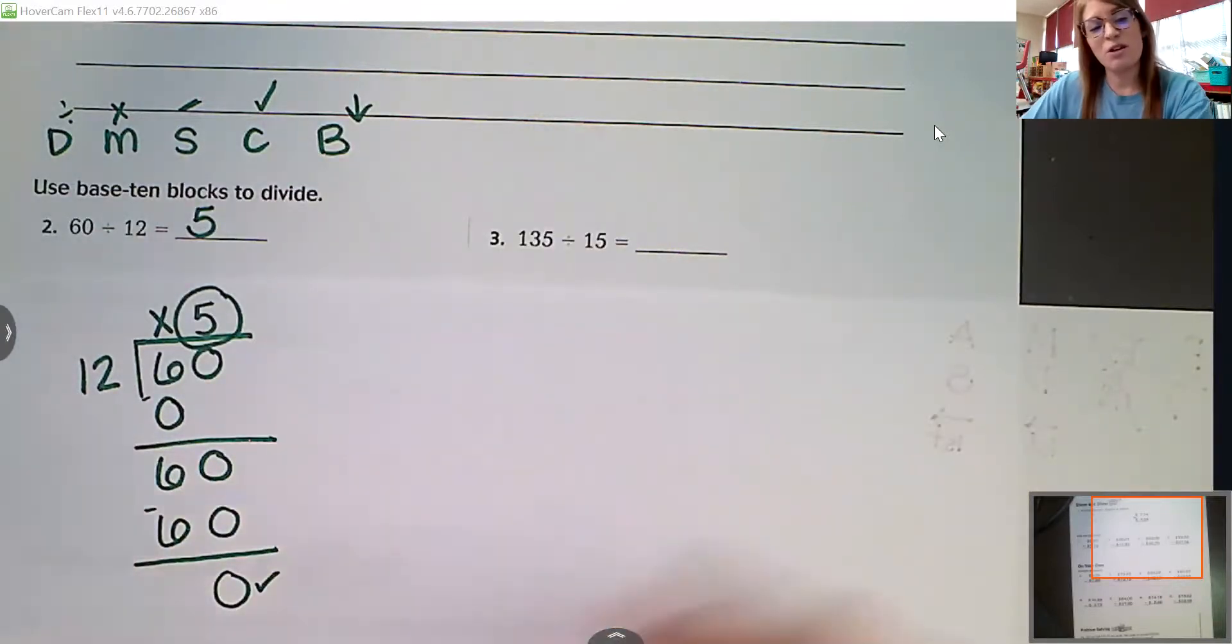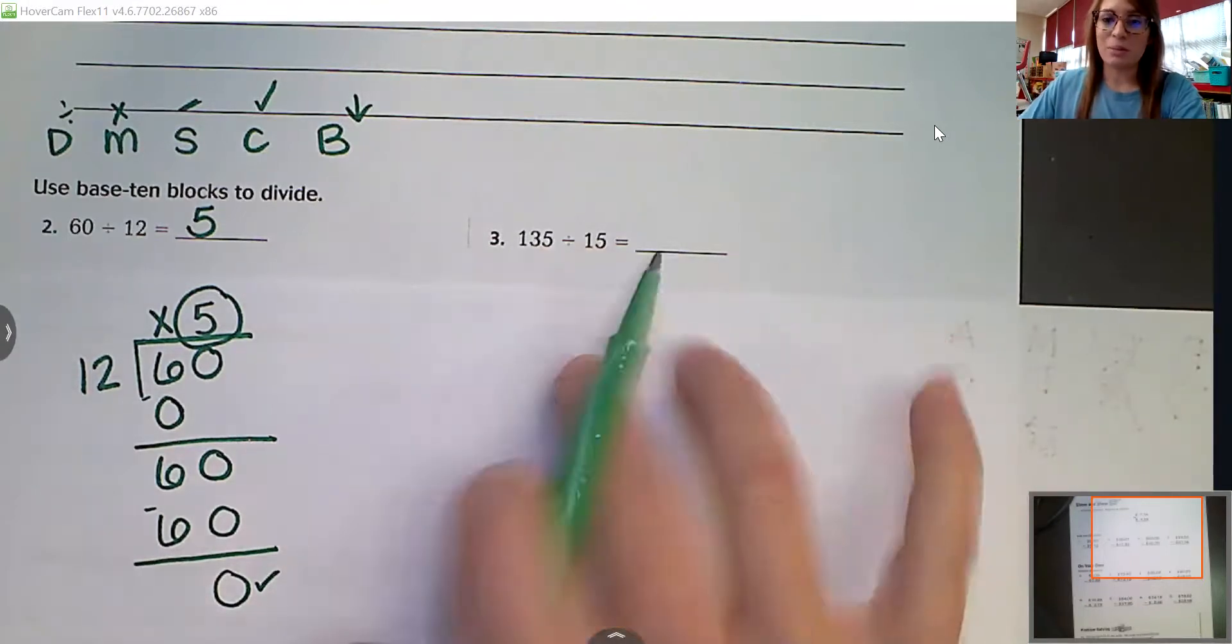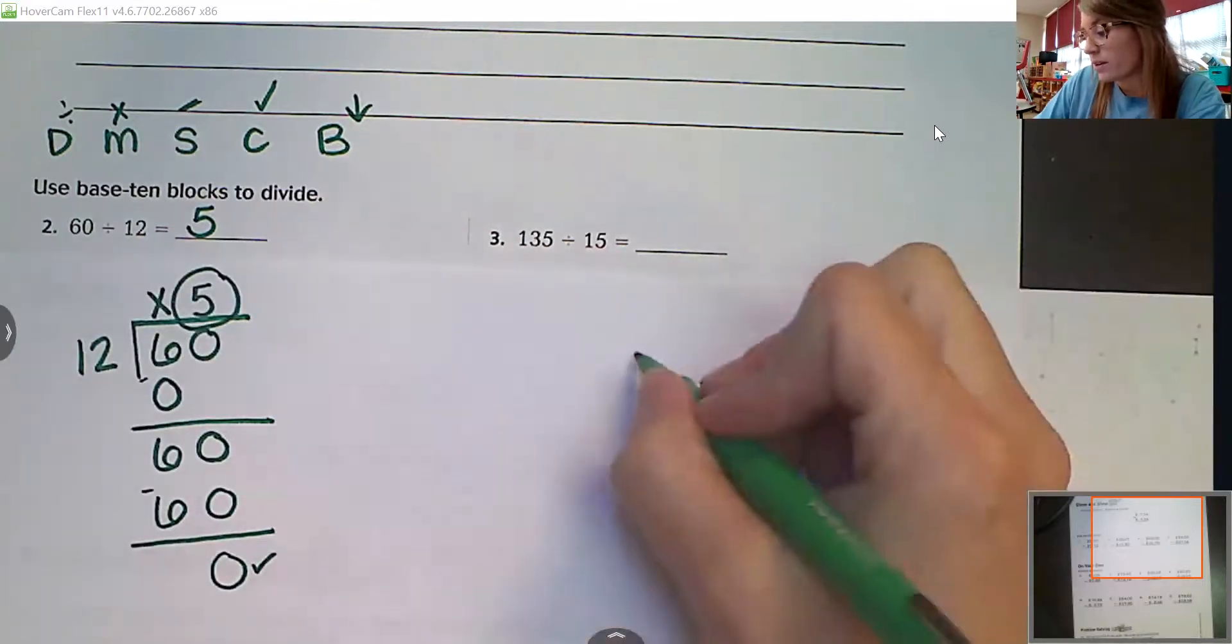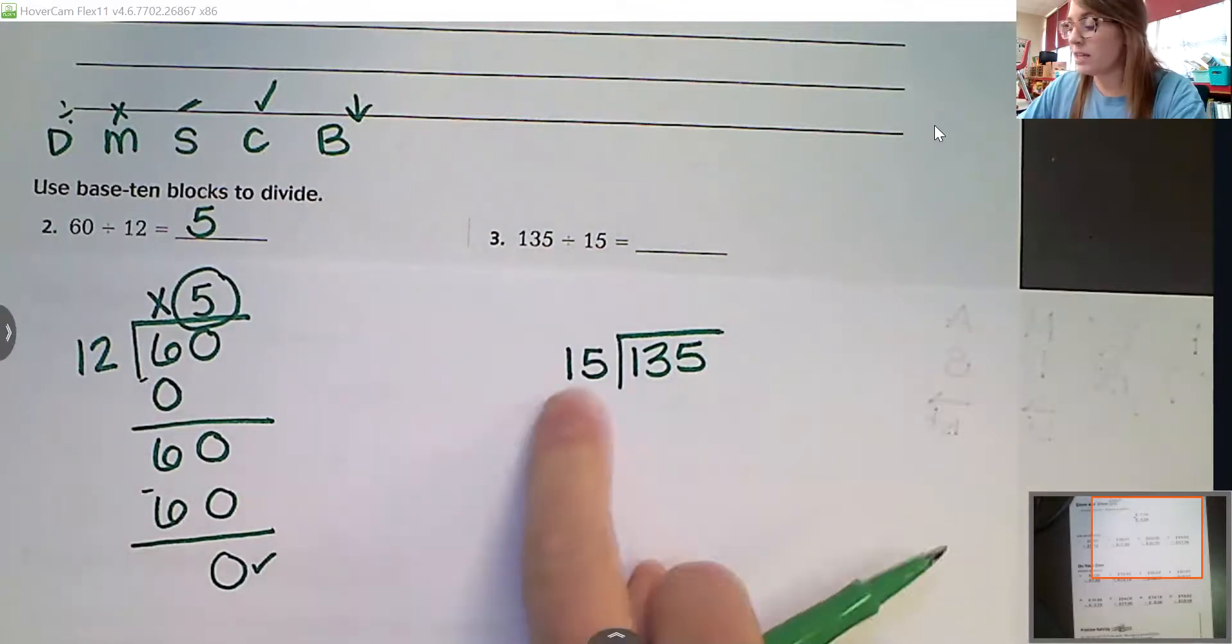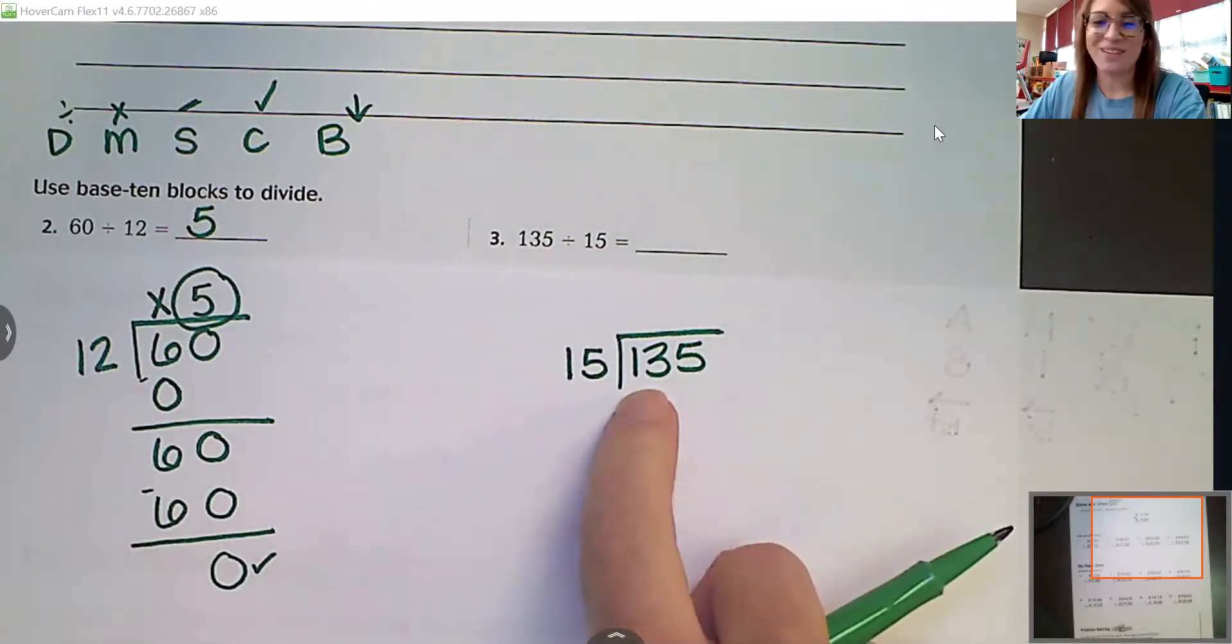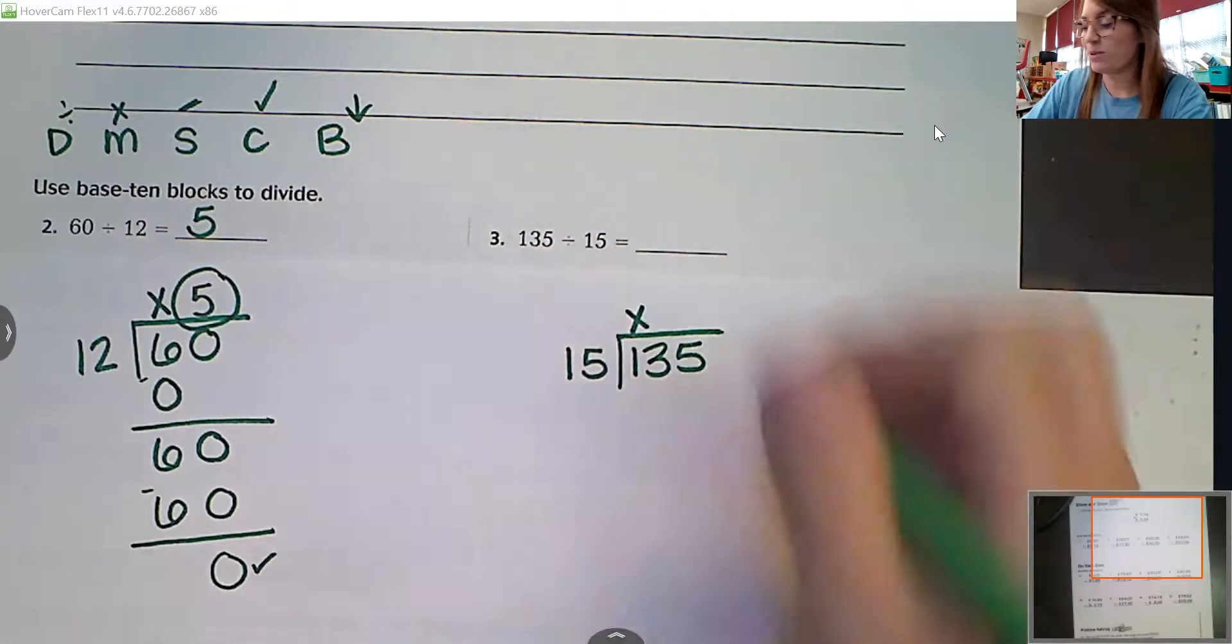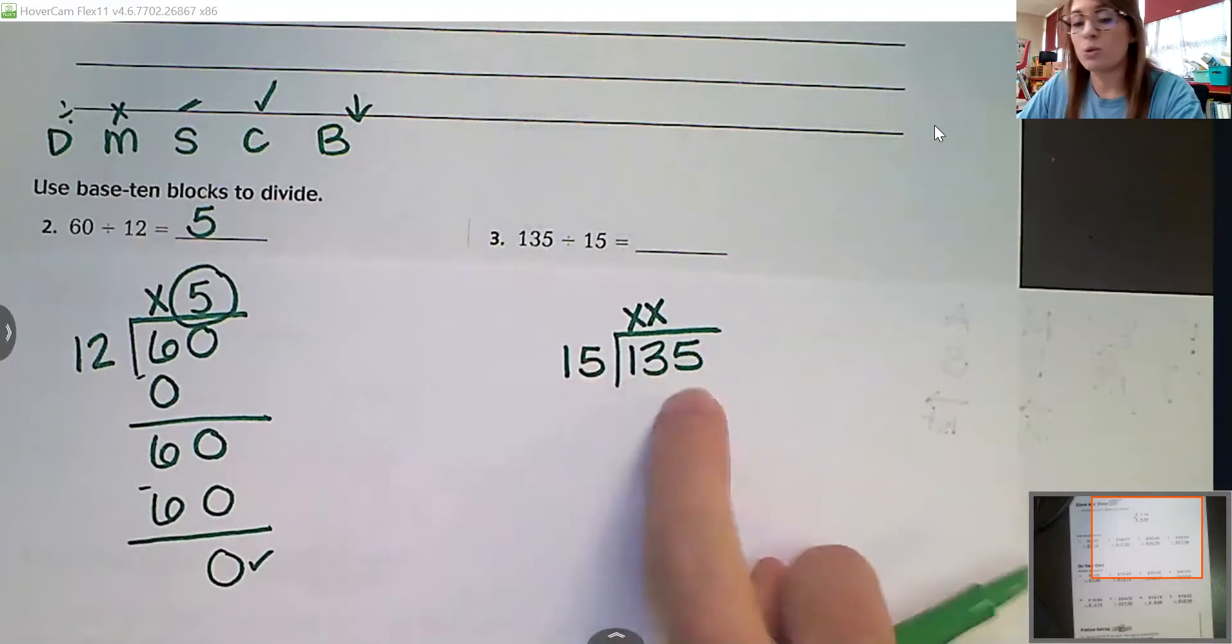That one wasn't super tough because if you know your 12s facts, you could have done that without dividing, but it's still good to see the process. This one, however, is going to be a little bit better to see the process. We've got 135 divided by 15. Can 15 go into one? No, it cannot. So I'm going to put an X right there. Can 15 go into 13? Nope. So we've got to look at it and say, 15 times what is going to get me close to 135?